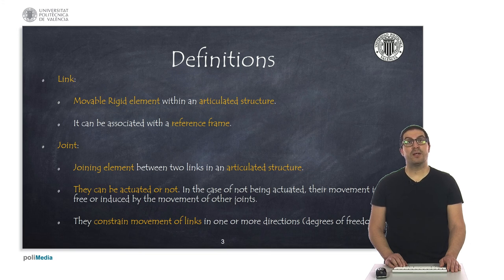On the other hand, a joint is an element that connects two links. Joints can be actuated but they can be also free in movement or their movement can be induced by the movement of other joints. In addition to this, joints constrain the movement of links in one or more directions, also called degrees of freedom of the joint.